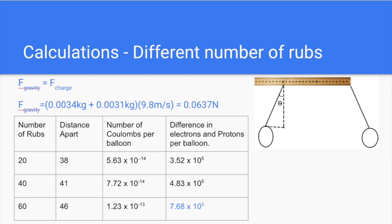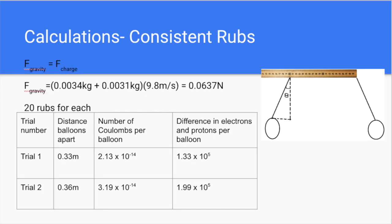The math is done by taking the angle which the balloon drifted apart from 90 degrees, and use that to find the force that the balloons had on each other, and taking that number to find the number of coulombs per balloon, and you can use that to find the difference in electrons and protons on each of the balloons. The math is the same for the same number of rubs as the variable rubs, though this time the data points were more consistent with each other because we didn't change any of the variables.